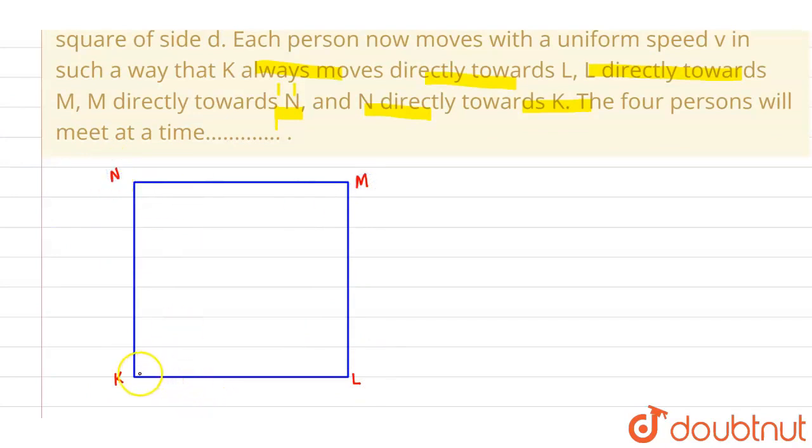So K is going in this particular direction initially, let's say with velocity v. And L will be going in this particular direction towards M, M will be going towards N and N will be going towards K.